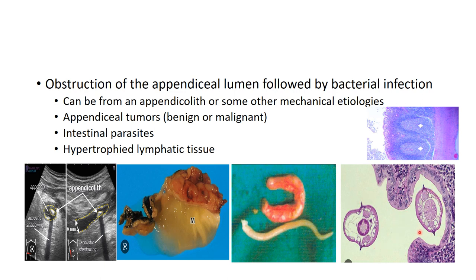This picture shows Enterobius vermicularis eggs that can be found on histopathology of the appendix. The fourth cause is hypertrophied lymphatic tissue — a discrete thickening of the lamina propria that often effaces the submucosal layer. It is usually identified in pediatric patients and is associated with viral gastroenteritis. Pediatric patients with viral gastroenteritis are more liable to develop hypertrophic lymphatic tissue, leading to obstruction of the appendiceal lumen and acute appendicitis.